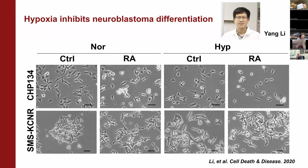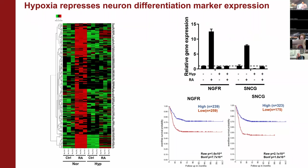Because differentiation requires expression of certain differentiation markers, we performed RNA-seq analysis to identify genes highly induced by retinoic acid treatment — the red genes — but fully repressed under hypoxia conditions. There are hundreds of those genes. Representative ones are NGFR and SNCG, which are established neuron differentiation markers. In patients with high expression of those differentiation markers, survival is much better than those with low differentiation. So the better the differentiation, the better the outcome.